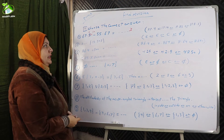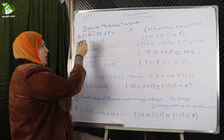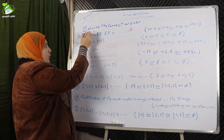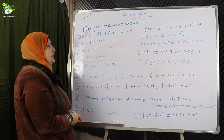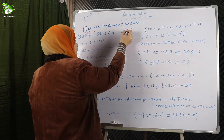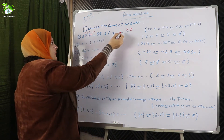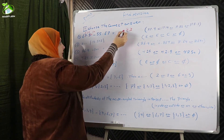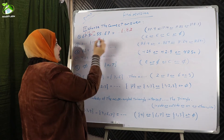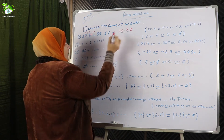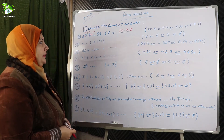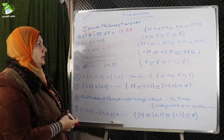Four minus six can't be — borrow one from seven. Seven became six and four became fourteen. Fourteen minus six equals eight. Don't forget the decimal point. Six minus five equals one, six minus five equals one. The answer will be eleven point eight nine.